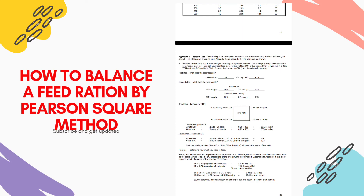The final step is to calculate the as-fed weight from the dry matter weight. The dry matter requirement for this steer is 14 pounds per day. The ration contains 25% alfalfa hay, so 25% of 14 is 3.5 pounds of dry matter from alfalfa hay, and 75% grain mix, so 75% of 14 is 10.5 pounds of dry matter from grain. Together, these sum to 14 pounds dry matter.